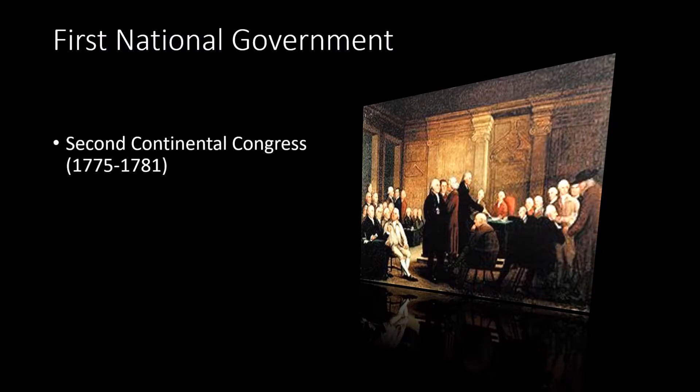Our first national government, just to keep in mind, is the Second Continental Congress — we talked about this. It happens right after the elections in Concord, and it is a unitary government: one branch, just a group of people, and they are essentially the national government.